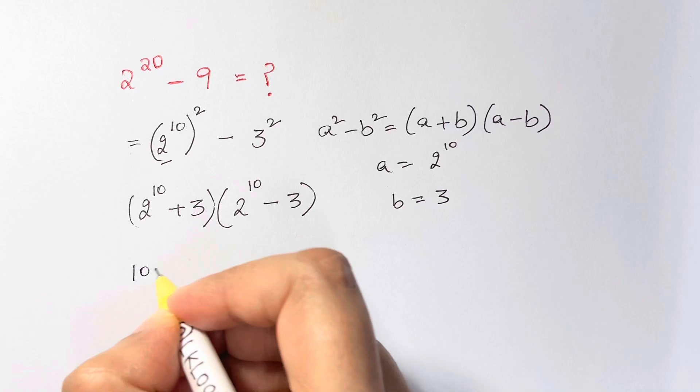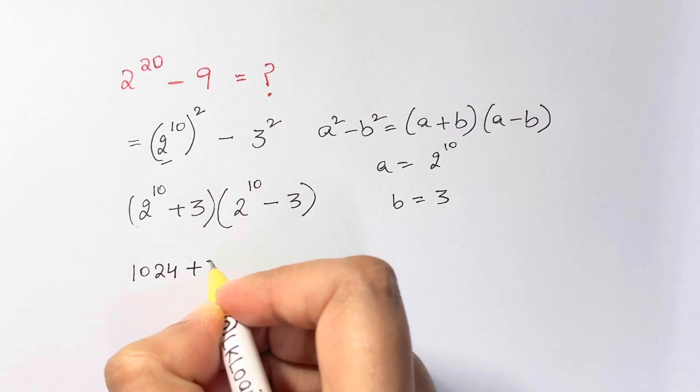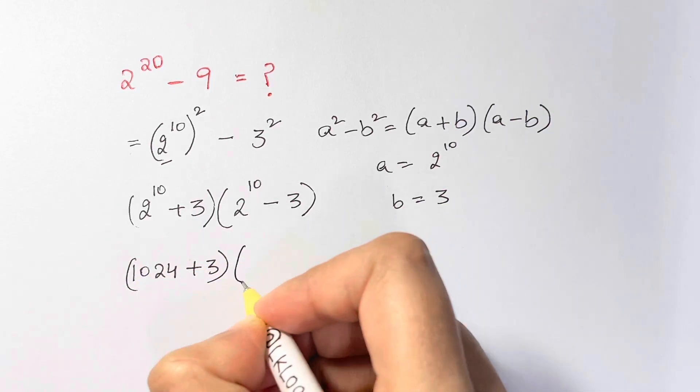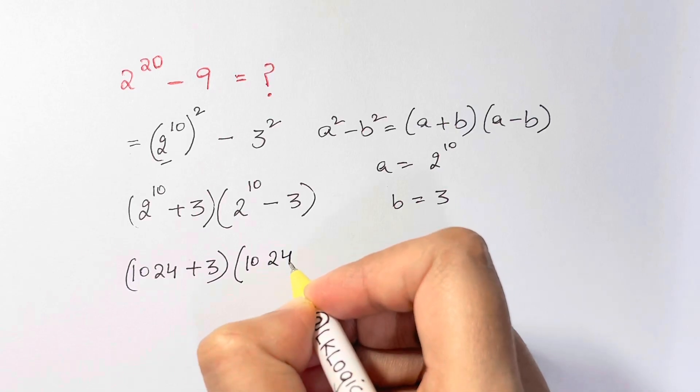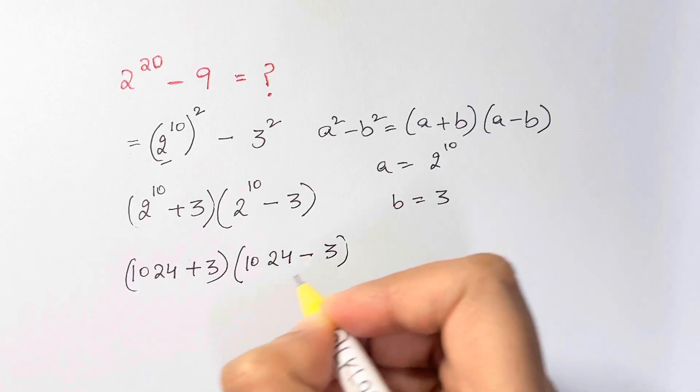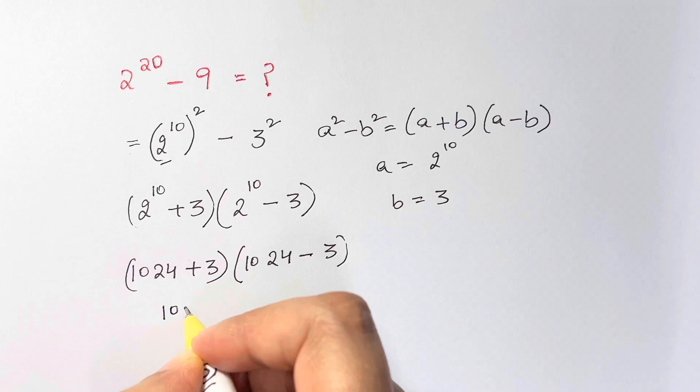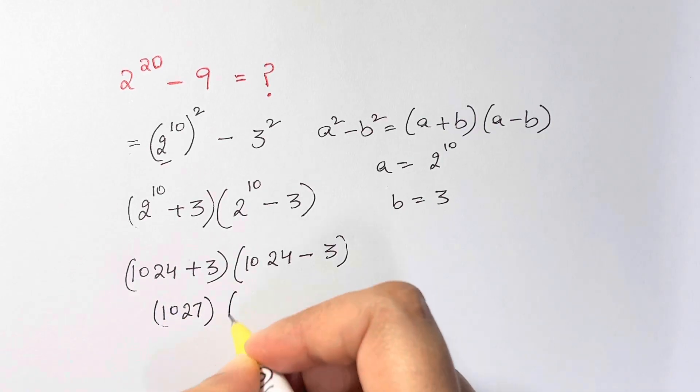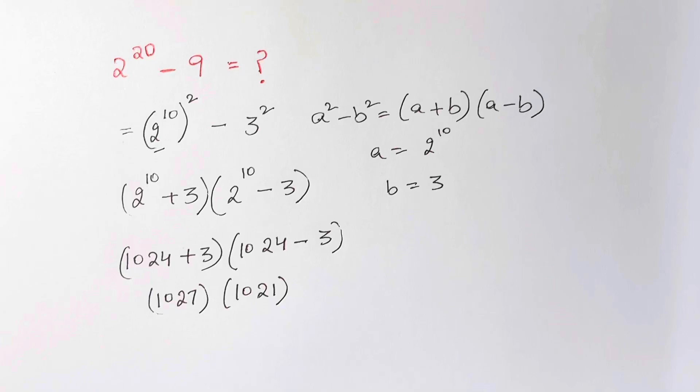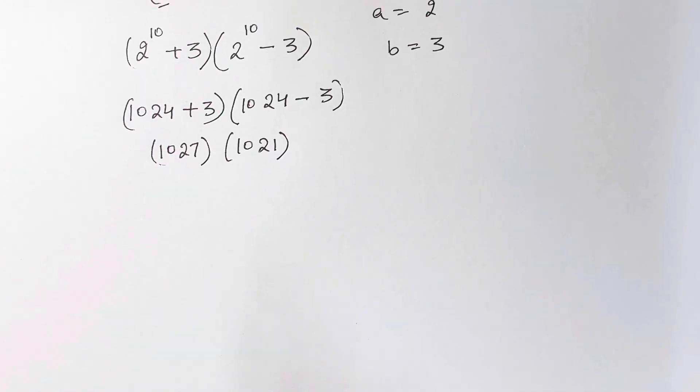And 2 raised to 10 is 1024 plus 3, then times 1024 minus 3. And that's equal to 1027 times 1021.